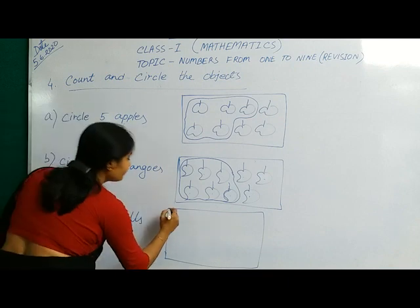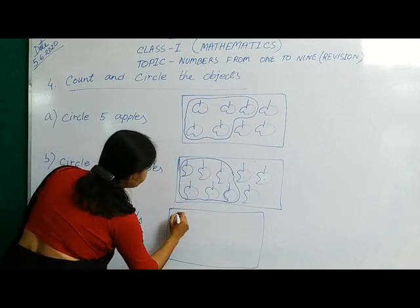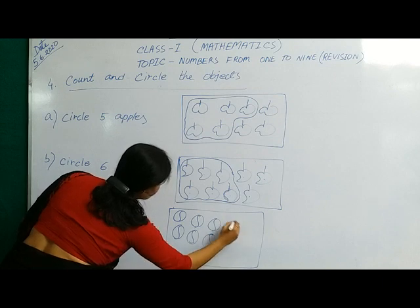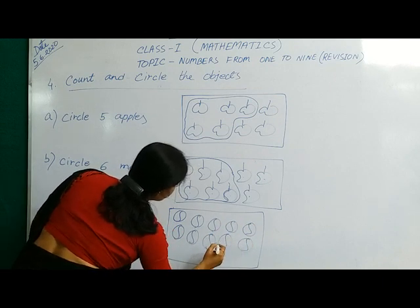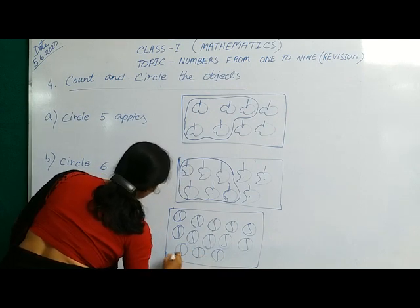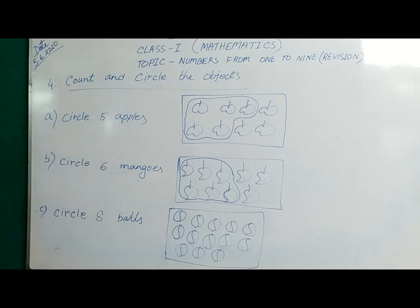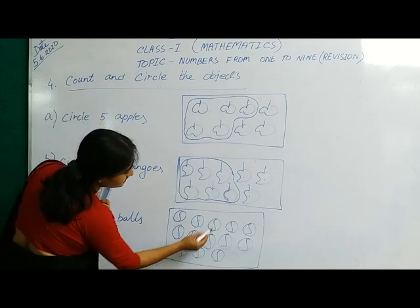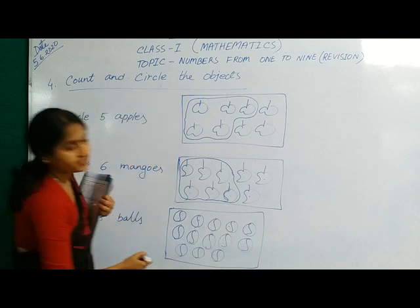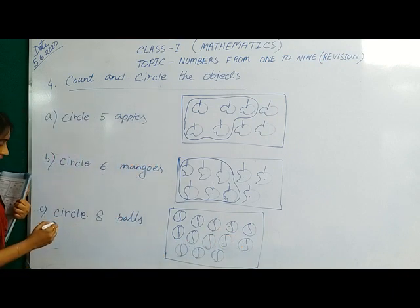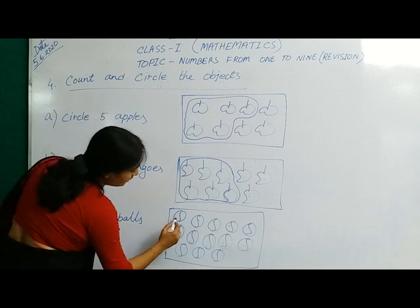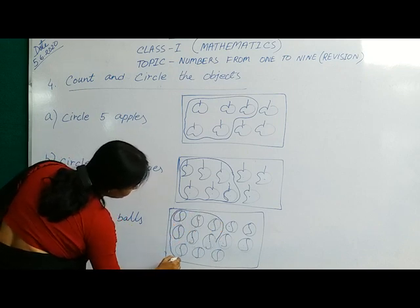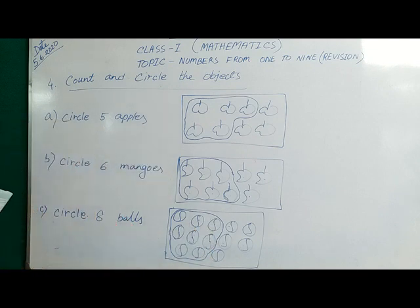You all will note down in your notebook. Okay, children. Circle. Eight balls. How many balls are here? 1, 2, 3, 4, 5, 6, 7, 8, 9, 10, 11, 12, 13. 13 balls are here. You have to circle. Only eight balls. Count it. 1, 2, 3, 4, 5, 6, 7, 8. So, circle only eight balls. Okay, children. You all will practice in this way in your home.